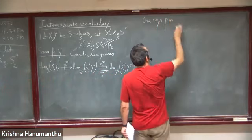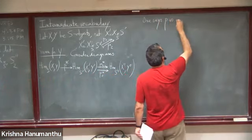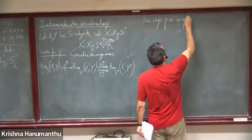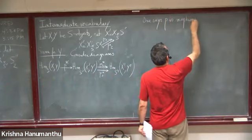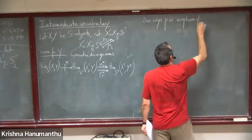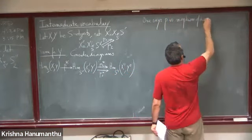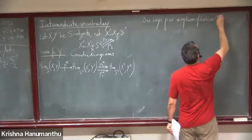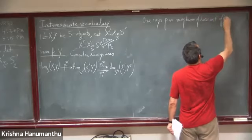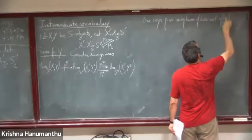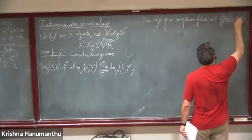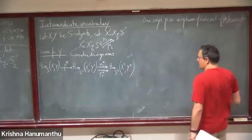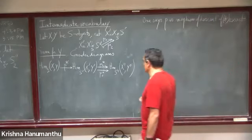One says that P is a morphism of descent if this diagram — which we call star — is exact.